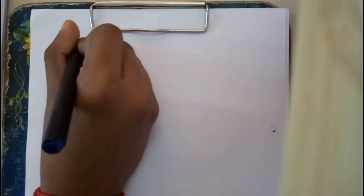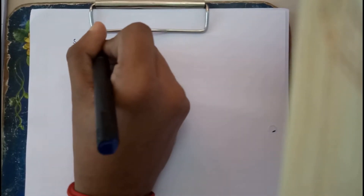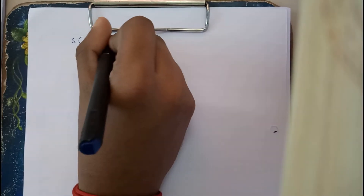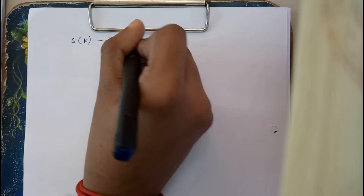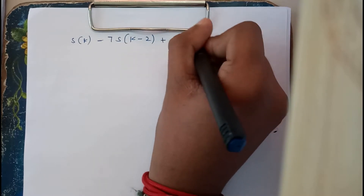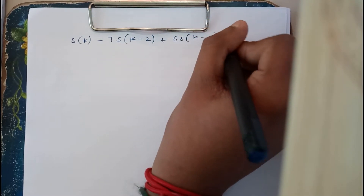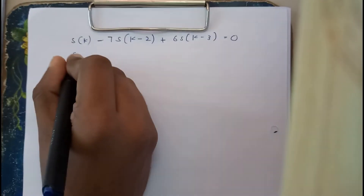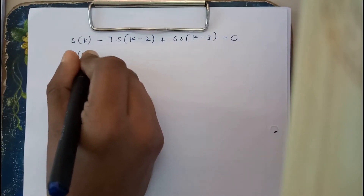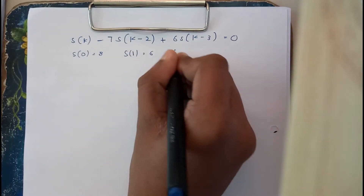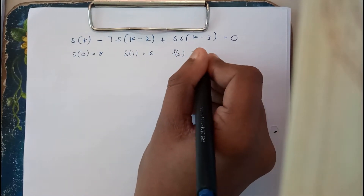The question given is: solve s(k). You can write it in any terms — a, b, c, it's up to you. The recurrence is s(k) minus 2 plus 6·s(k-3) is equal to 0. The initial conditions given are s(0) = 8, s(1) = 6, and s(2) = 22.